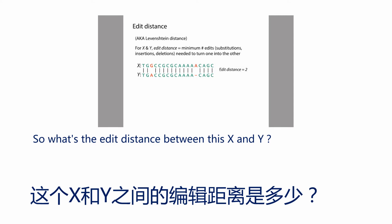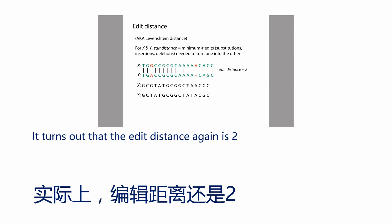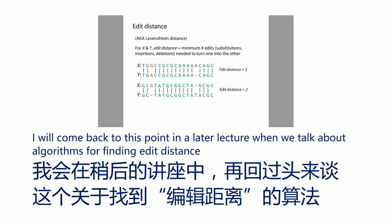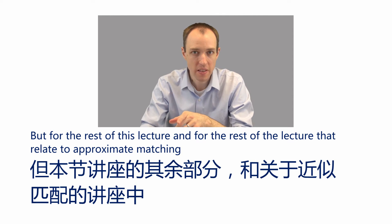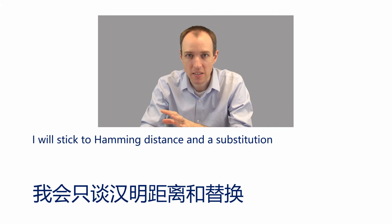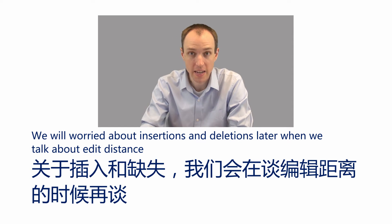Here's another example. What's the edit distance between this x and y? This example is a little harder. It turns out the edit distance is again two, though when you first looked at x and y it probably seemed like it would be greater. We'll come back to this in a later lecture when we talk about algorithms for finding edit distance. For the rest of this lecture and the lectures on approximate matching, we'll stick to Hamming distance and substitutions, and worry about insertions and deletions later.